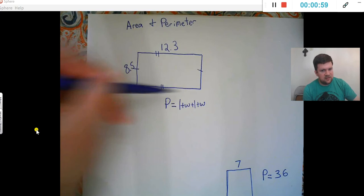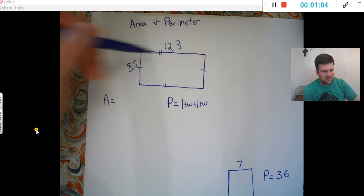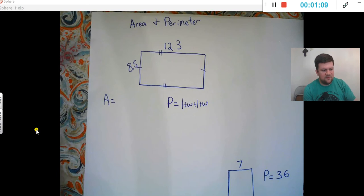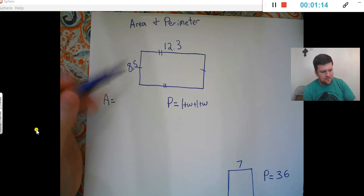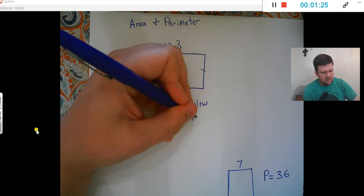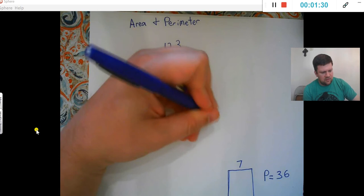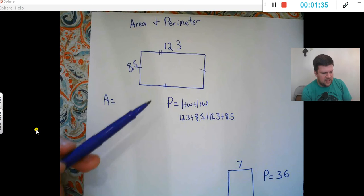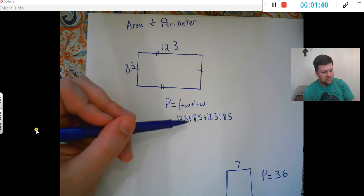And perimeter gives you the distance around the shape. So if you're building a fence around this shape, that's what you would... that tells you right there you're finding perimeter. So all I need to do for this is to add a length plus width plus another length plus another width. So 12.3 plus 8.5 and the same thing over again.